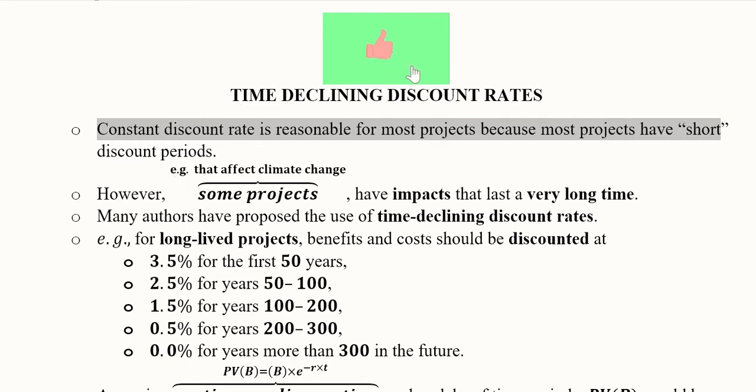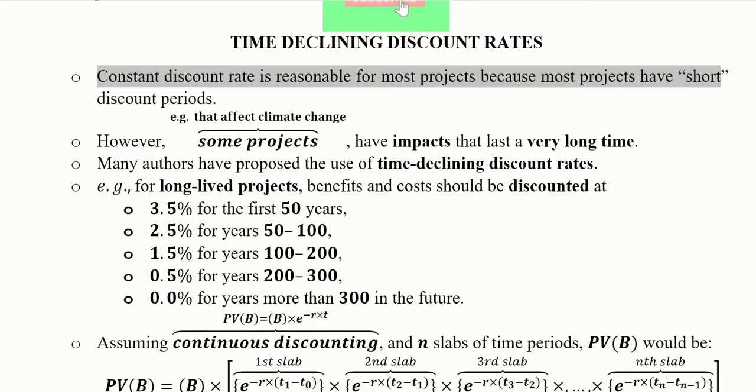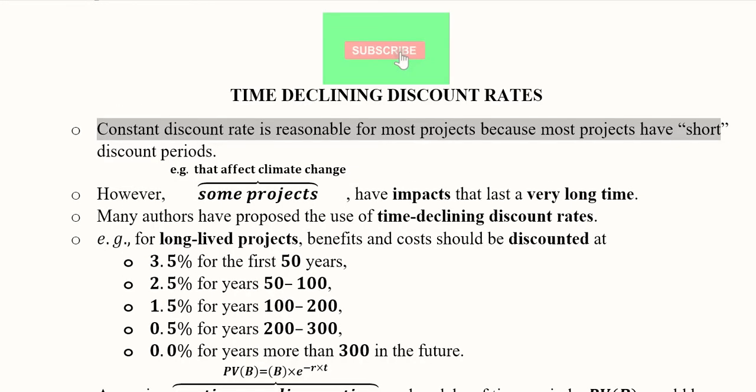As we remember, this is the usual method that we have a constant discount rate, but for short discount periods. But there are projects that are long in terms of their time period, for example the projects that can affect the climate change. They have a very long time period.